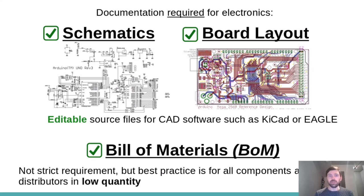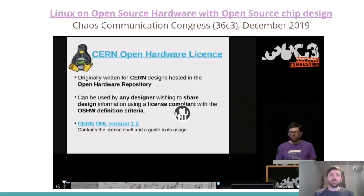You can use proprietary CAD software and it can still be considered open source hardware — it's not required, but it is best practice to use open source software if you can. Also the bill of materials or parts list: also not a strict requirement, but best practice is for all the components to be available from distributors in low quantity. The point of all this is to lower the barriers of entry and enable collaborative development. I talk more about open source hardware, including different licensing options, in a talk I gave last year, and you can watch that video online.